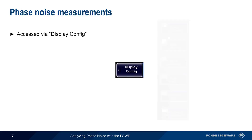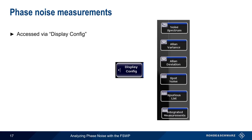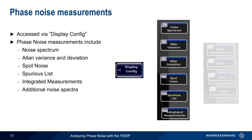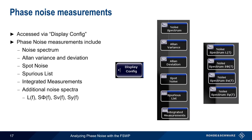The Display Config softkey brings up a list of the different phase noise measurements supported by the FSWP. The first is Noise Spectrum, which is the plot of phase noise versus offset that we've already covered. Additional measurements include Allan Variance and Deviation, Spot Noise, Spurious Measurements, and Integrated Measurements. The FSWP also supports additional ways of displaying noise spectrum, such as Sv(f) and Sy(f), but we won't be covering those in this presentation.